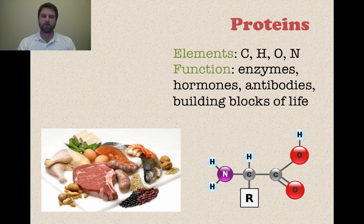The R on that does not represent an element. It just represents something attached to that carbon, which could be anything. So you see mainly your carbon, hydrogen, oxygen, and then that purple nitrogen right there. These are mostly meats that you find these in.